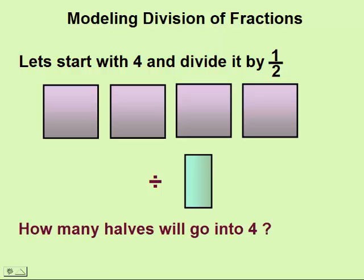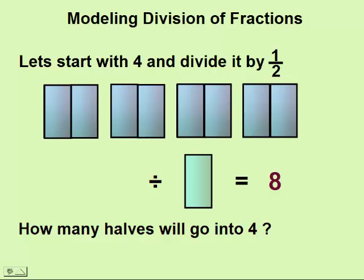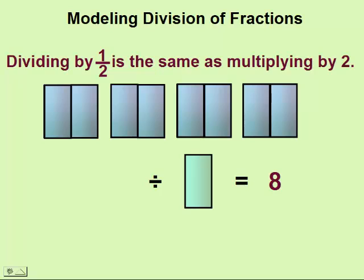How many halves will go into four? Eight. Each whole will take two halves. Dividing by a half is kind of like multiplying by two. Four divided by a half would be the same as four multiplied by two. Both answers give us eight.